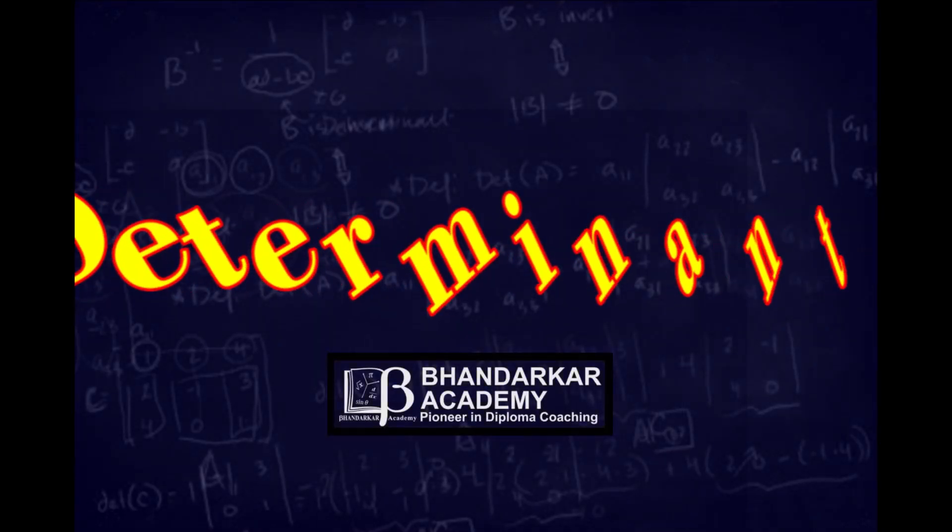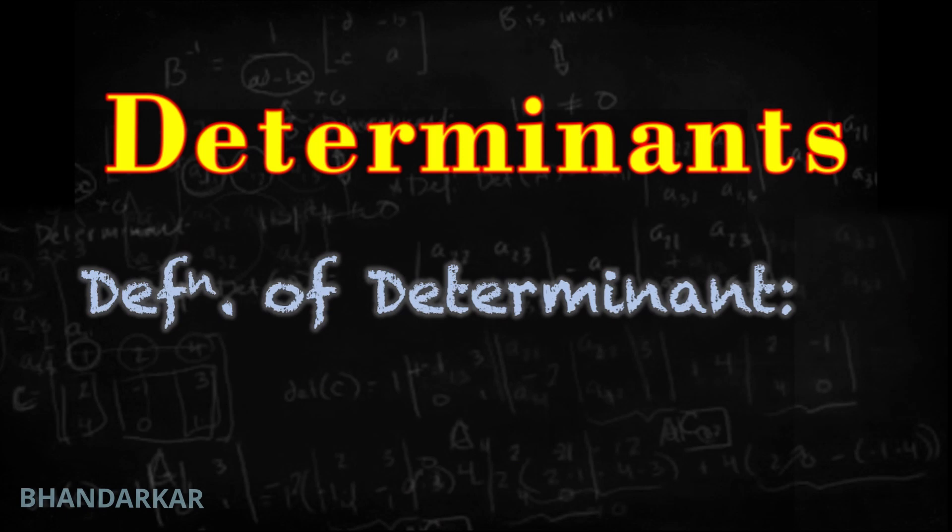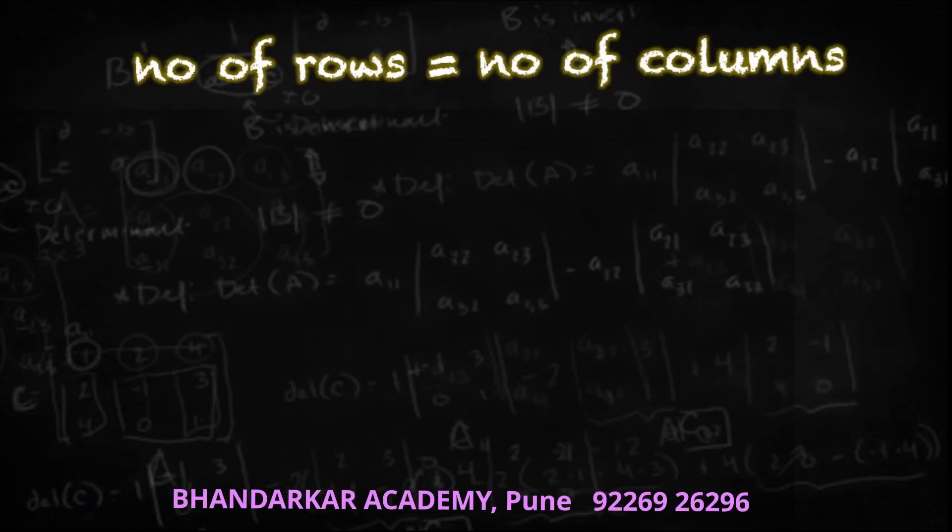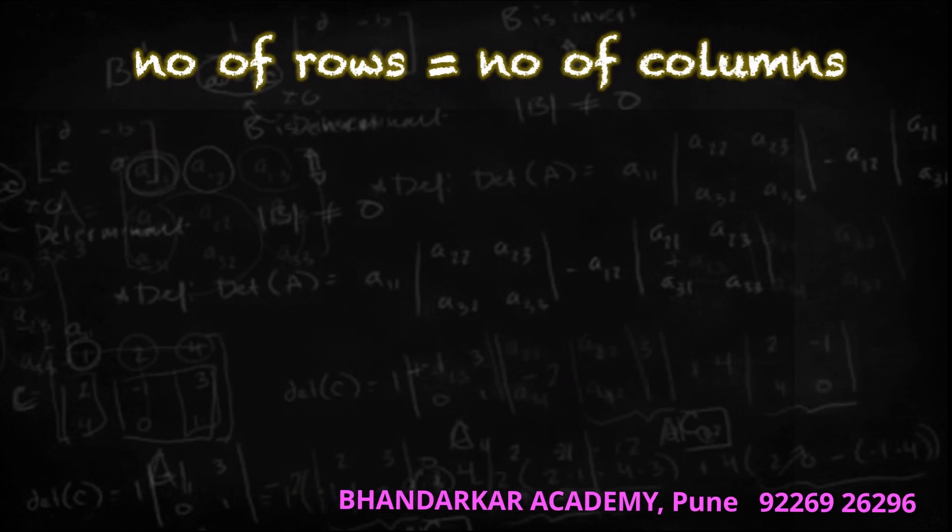Next chapter: Determinants. Definition of determinant: number of rows is equal to number of columns.